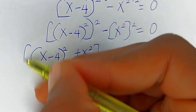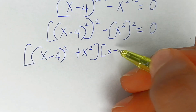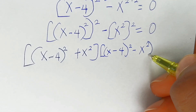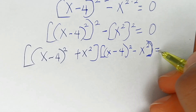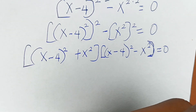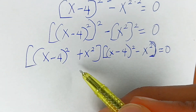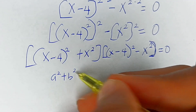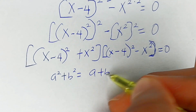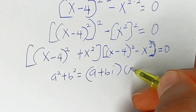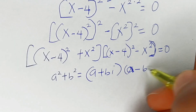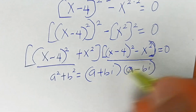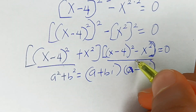This is a difference of two squares, so we can write it as [(x minus 4) squared plus x squared] multiplied by [(x minus 4) squared minus x squared] equals 0. Now the first factor is a sum of two squares. The sum of two squares rule says a squared plus b squared equals (a plus bi)(a minus bi).